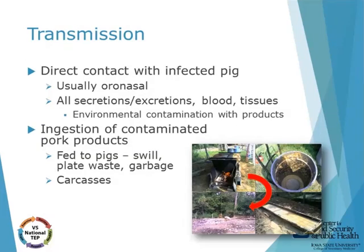Transmission of the virus can occur by direct contact of susceptible animals with infected animals. Exposure is most commonly oral-nasal through saliva, ocular secretions, or nasal discharge, as the virus is found in all secretions and excretions from infected animals. It can be found in tissues and bodily fluids, especially at high levels in the blood, even after the animal dies.